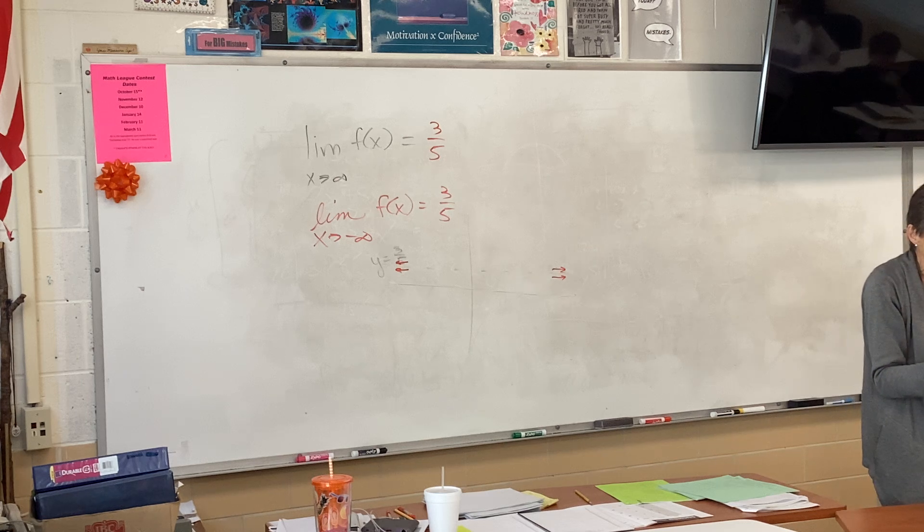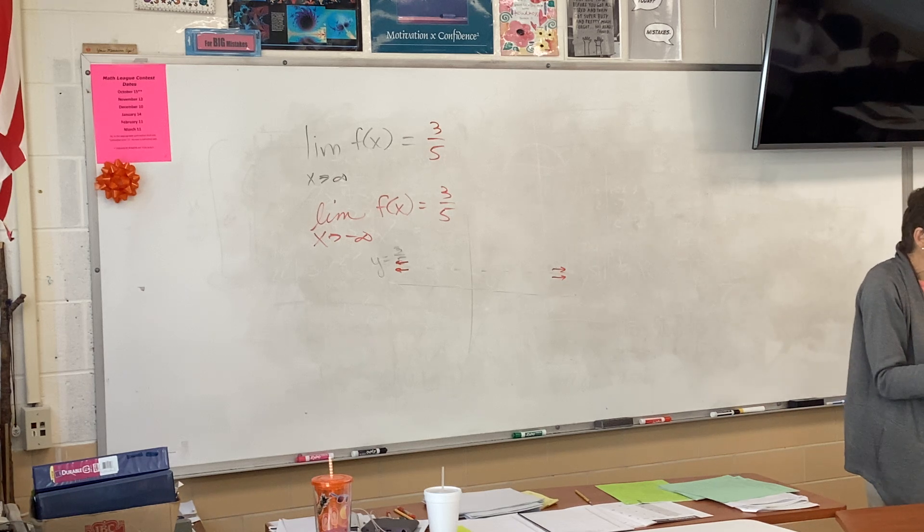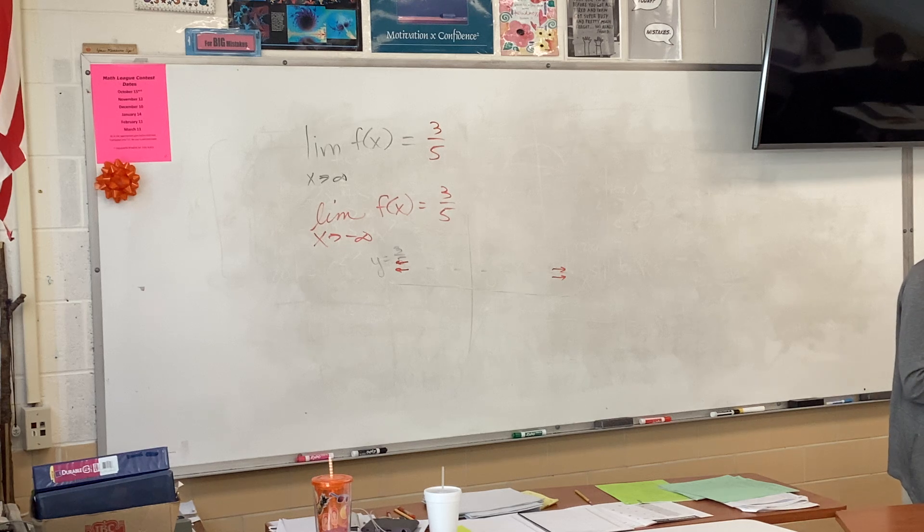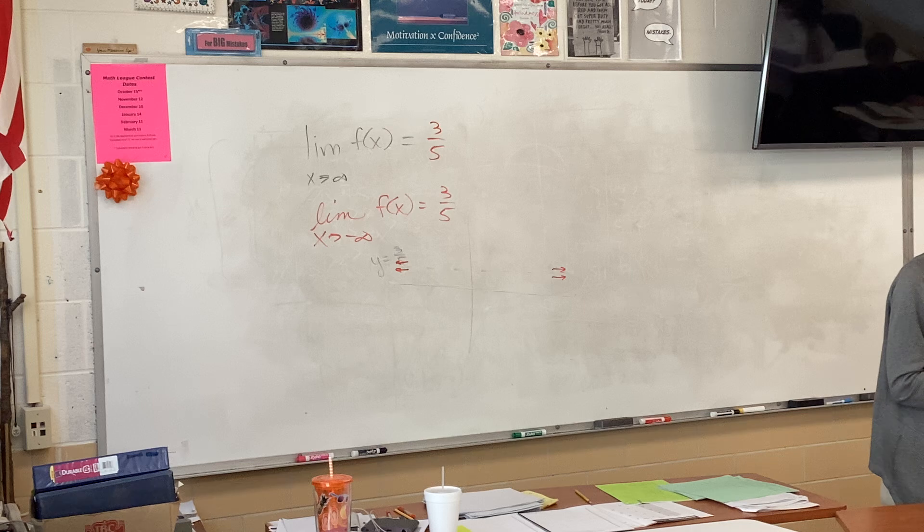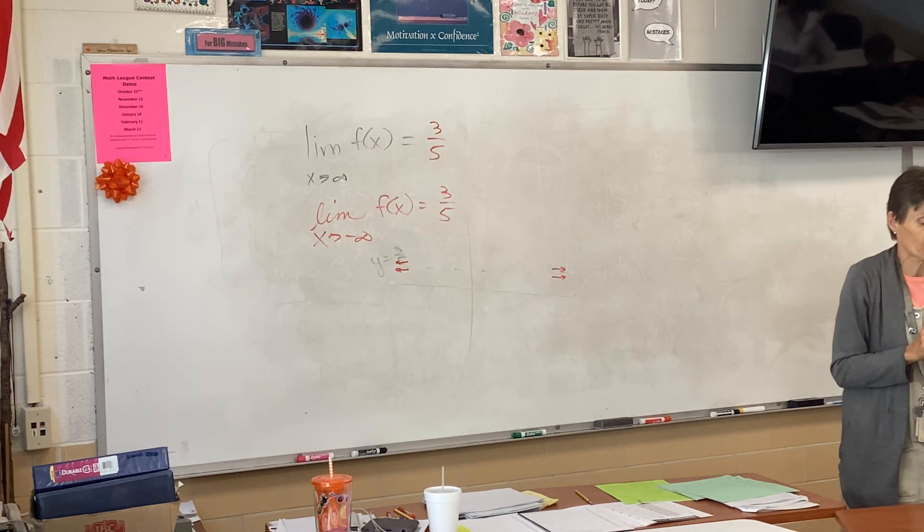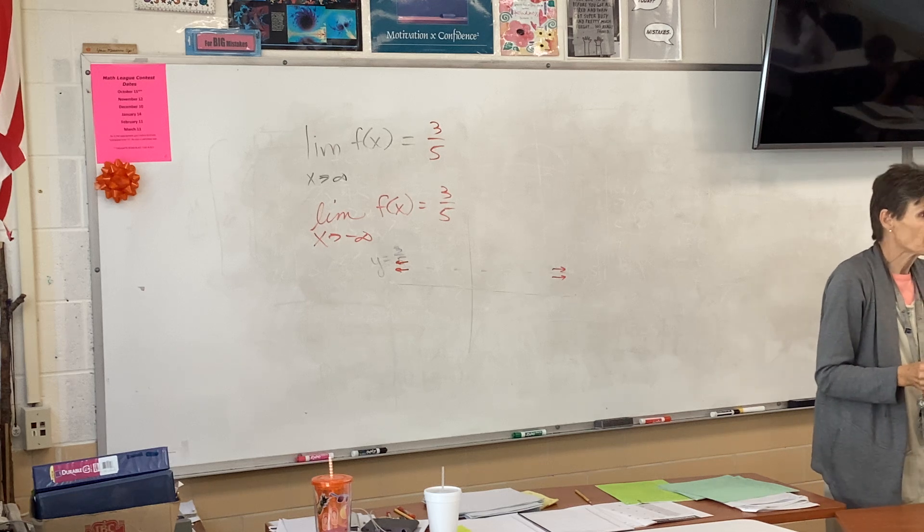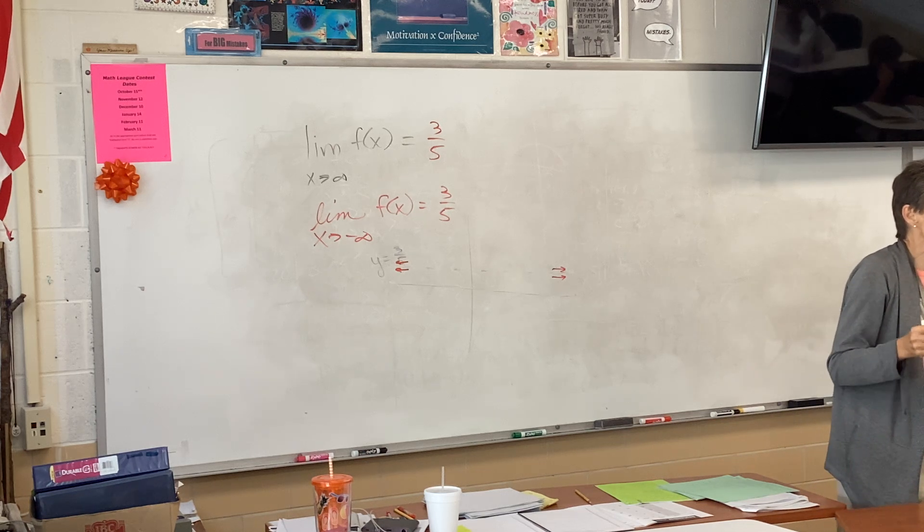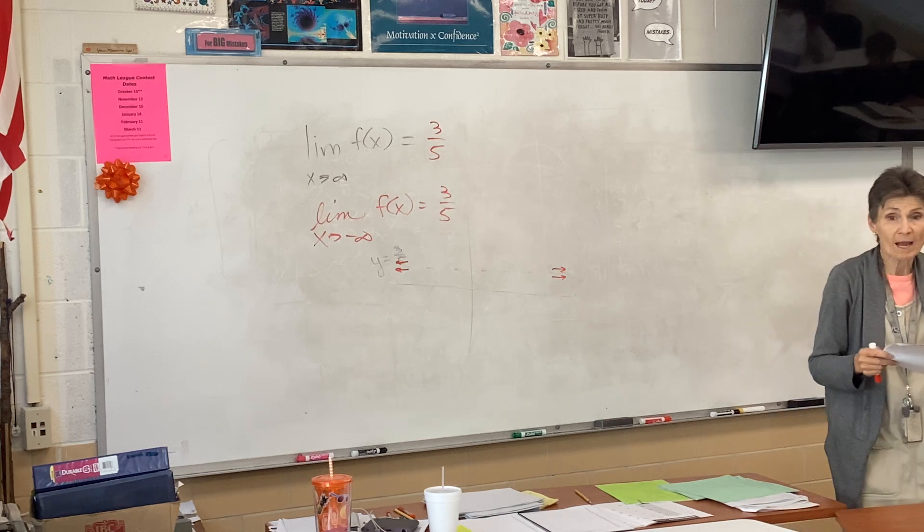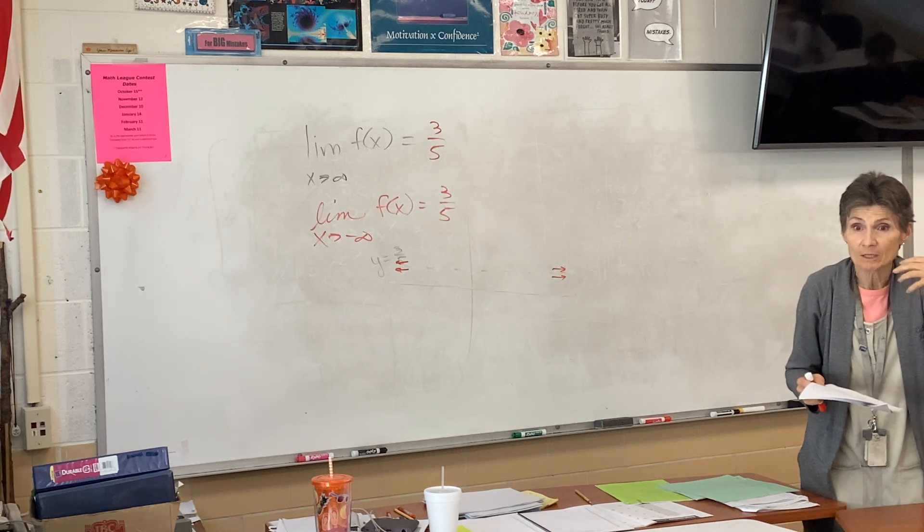Okay? Now, those are the easy ones, when the x squared matches the x squared and the x matches the x. What are we going to do with something like B? What's happening in B? Which term in the whole problem, which term is the powerful one? X squared. X squared is getting huge, right?